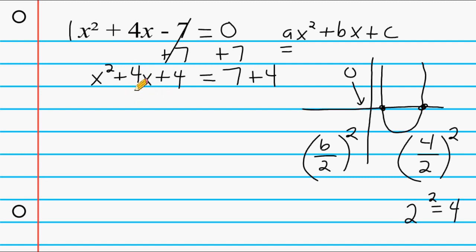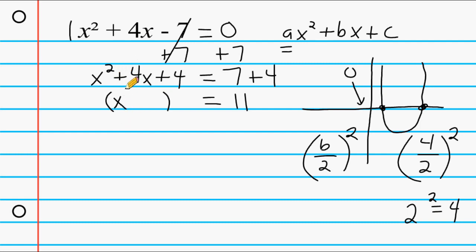Once you've written the result of (b/2)² on both sides, factor the trinomial and simplify the right-hand side. On the right we have positive 11. On the left, write parentheses: the first position is always x, and because we have a positive middle term, write a plus sign. Take your b term — 4 — cut it in half to get 2, and write that in the second position. So we get (x + 2)², which automatically creates the binomial that when squared produces this trinomial, giving us an equation we can solve for x.